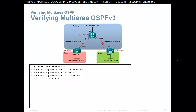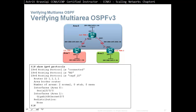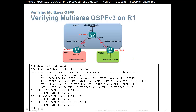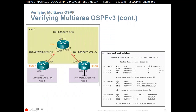Verifying Multi-Area OSPF version 3: 'show ipv6 protocols' shows we are running OSPF process 10, with two normal areas, no stub, no NSSA, the router ID, and again confirms this is an Area Border Router. 'Show ipv6 route ospf' shows one intra-area route learned and one inter-area route. Similar information is shown with 'show ipv6 ospf database'.